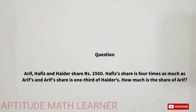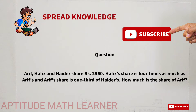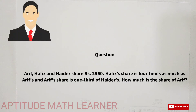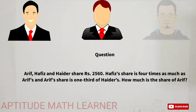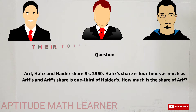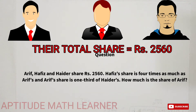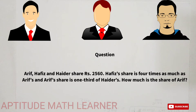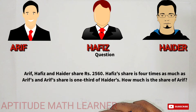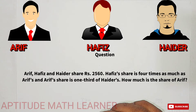Welcome to our YouTube channel, Aptitude Math Learner. Today we have another interesting question. The question is: Arif, Hafiz, and Hader share rupees two thousand five hundred and sixty. Hafiz's share is four times as much as Arif's share, and Arif's share is one third of Hader's. How much is the share of Arif?